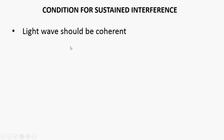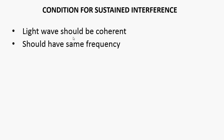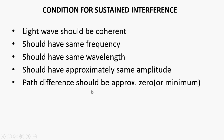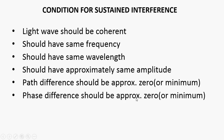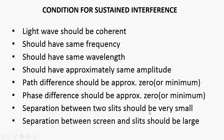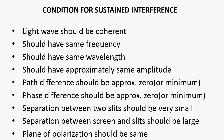For interference, there are certain conditions. Both light waves that are interfering must be coherent — meaning their frequency should be the same, wavelength the same, amplitude approximately the same, and path difference and phase difference approximately zero. Also, if fringes are formed through slits, the separation between the two slits should be very small, and the distance between the screen and the slit should be very large so that the fringes are clearly visible.